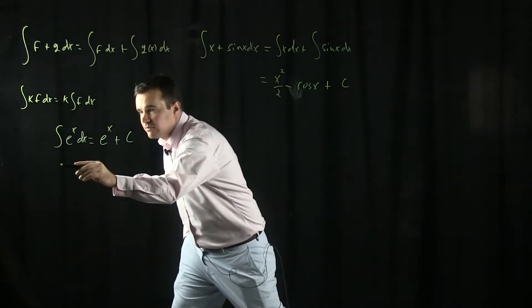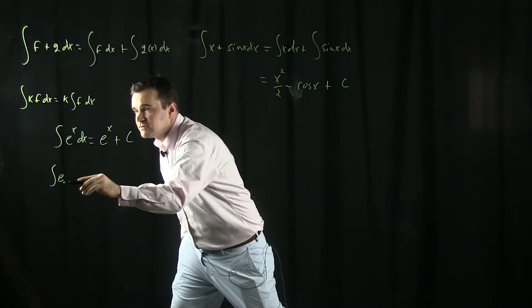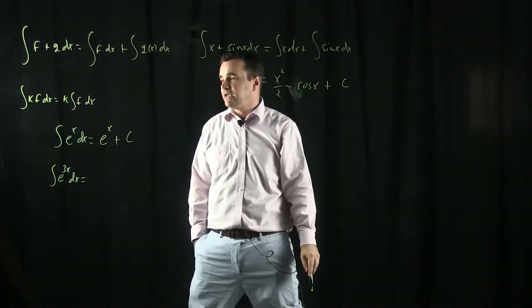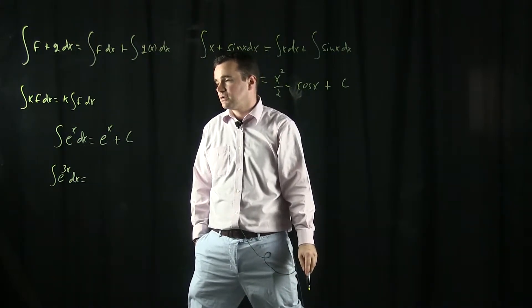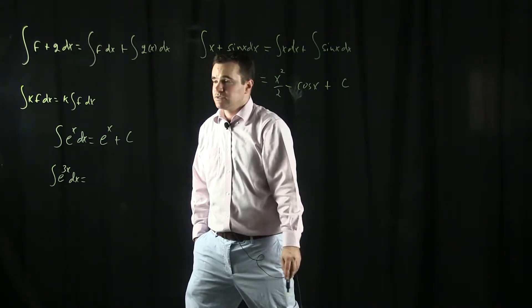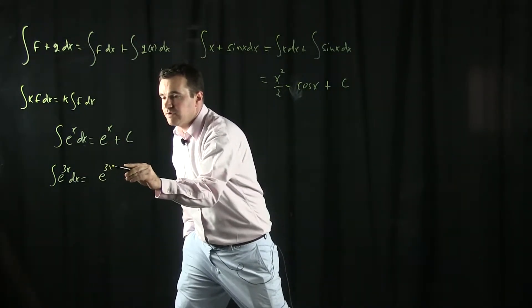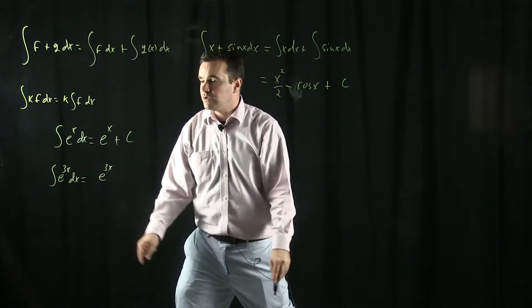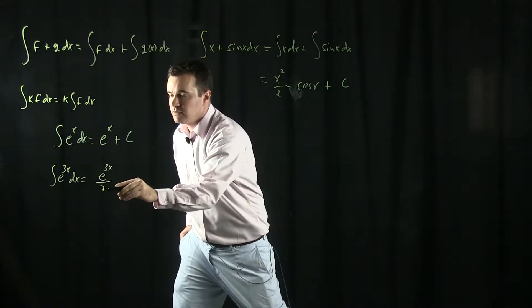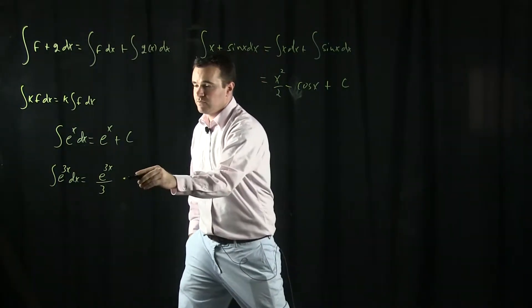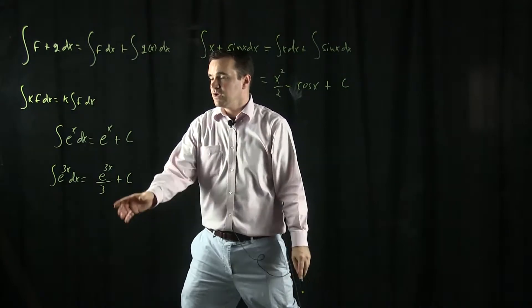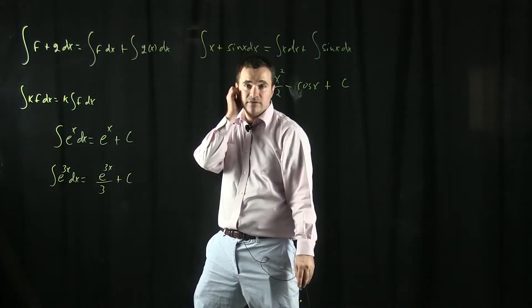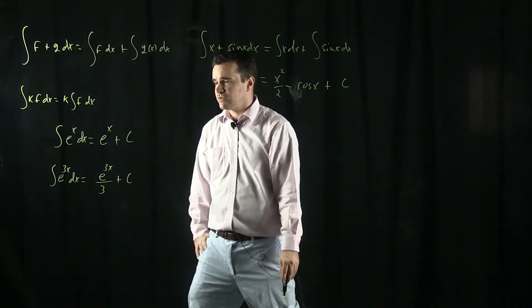What if I scaled it up a little bit? What if I asked you to find the anti-derivative of e^(3x) dx? I need a function whose derivative is e^(3x). You might start with e^(3x), but when you differentiate this, the chain rule gives you a factor of three — not what you want. So you actually want to divide by three to cancel that factor from the chain rule, and add your arbitrary constant. Taking the derivative gives 3e^(3x)/3, which equals e^(3x). That's where the formula comes from.